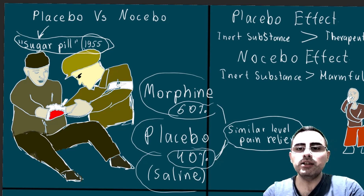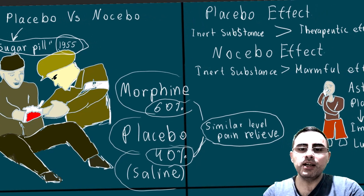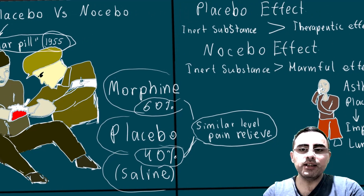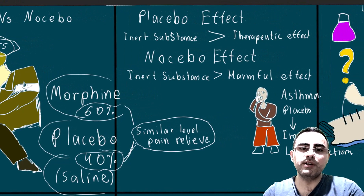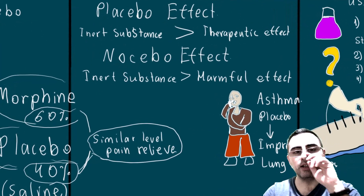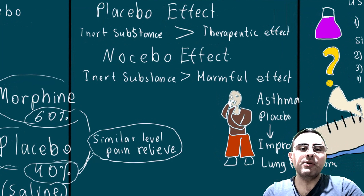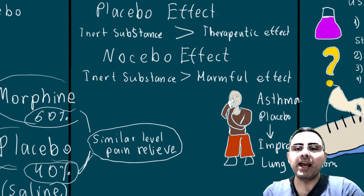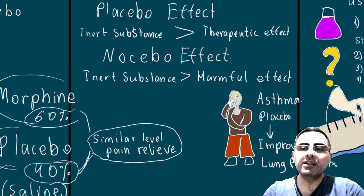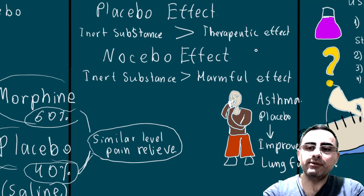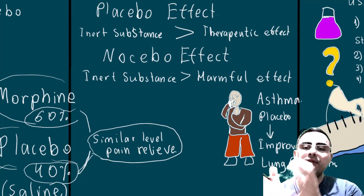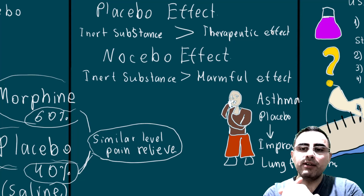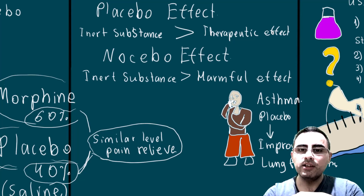Placebo is not new — it has been used since ancient times, but studies nowadays confirm placebo effects. The idea of the placebo effect is when an inert substance or medical manipulation has a real therapeutic effect. This effect is mostly pain relief, but it can be different kinds of therapeutic effects, like decrease of depression symptoms or improved breathing in case of asthma.